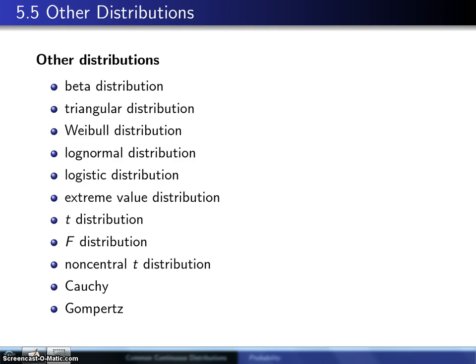So far, this chapter has introduced four continuous distributions that arise in practice. Those distributions are the uniform distribution, the exponential distribution, the gamma distribution, and the normal distribution.